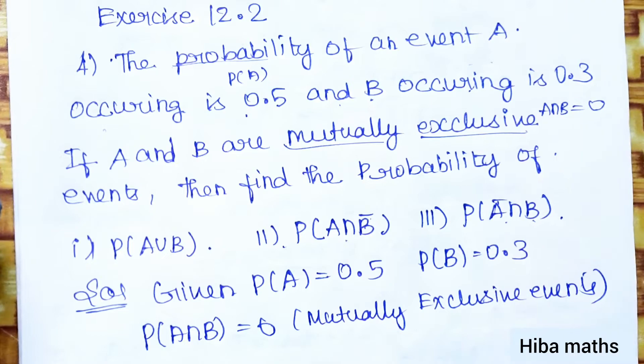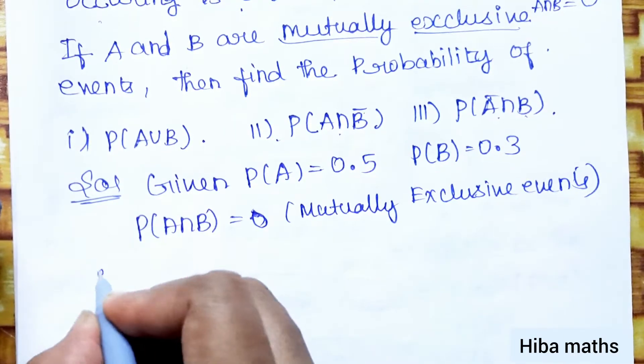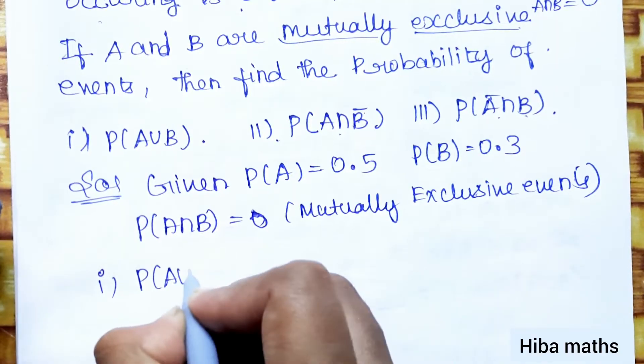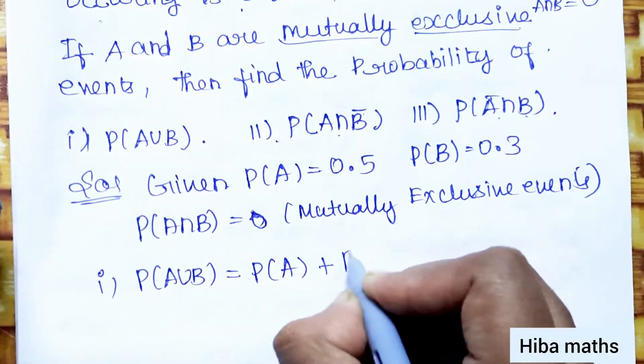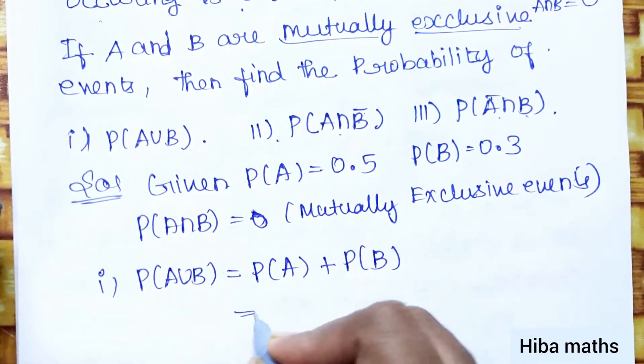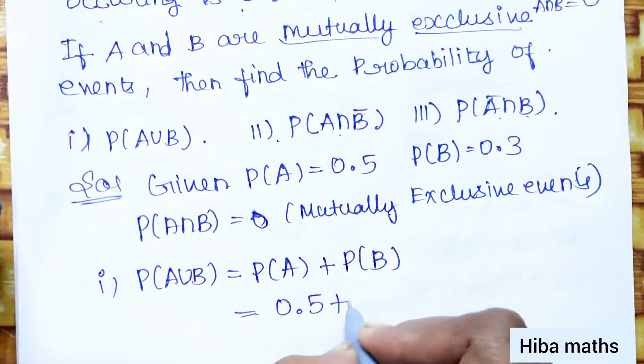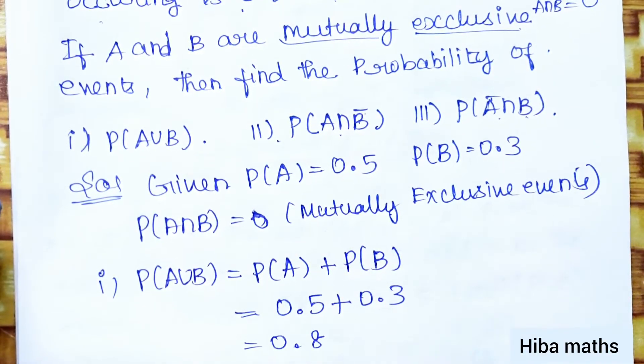We will solve one by one. First question is P(A∪B). P(A∪B), we will add P(A) and P(B). If mutually exclusive, this is 0, so 0.5 plus 0.3, that is 0.8.